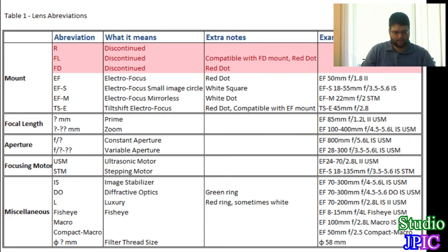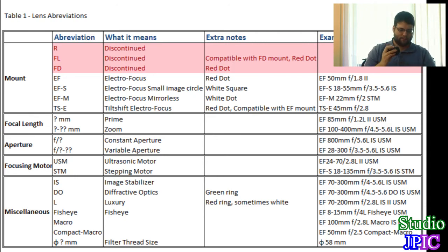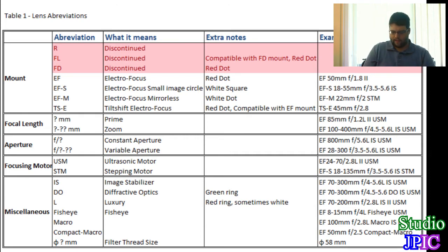The first category is the mount, which determines if your lens is going to fit on your camera. Basically it's the specification of the back part and the mechanism to attach it. In the table I included the older discontinued mounts — R, FL, and FD — which are not really important for most people today, but I included them for completeness.